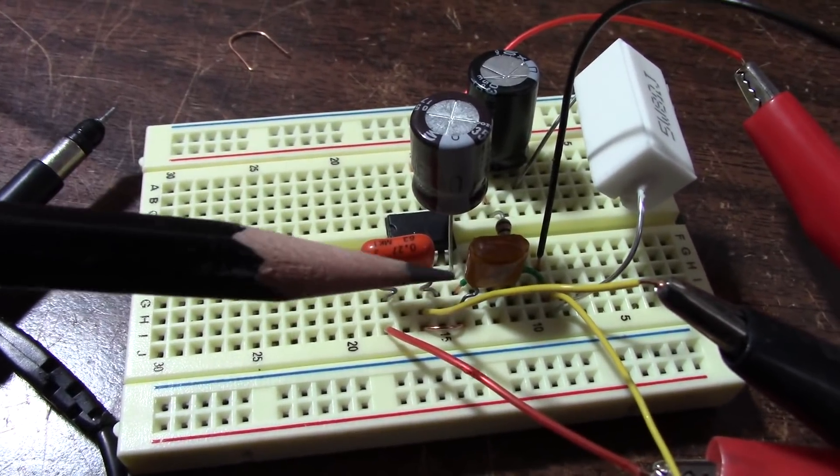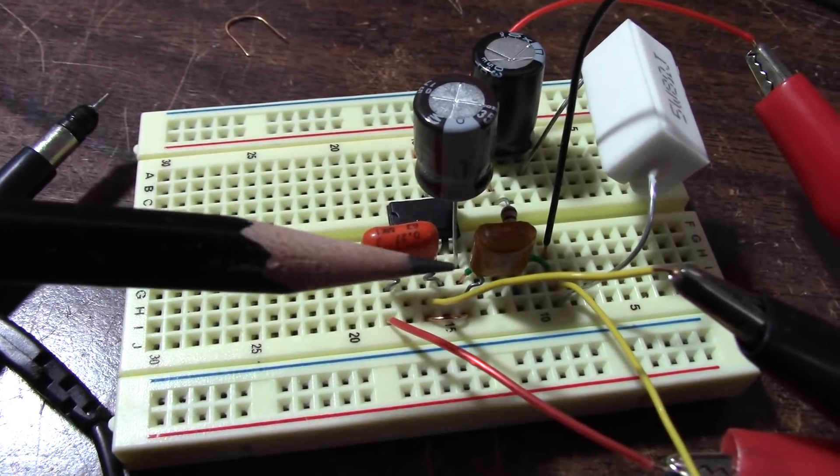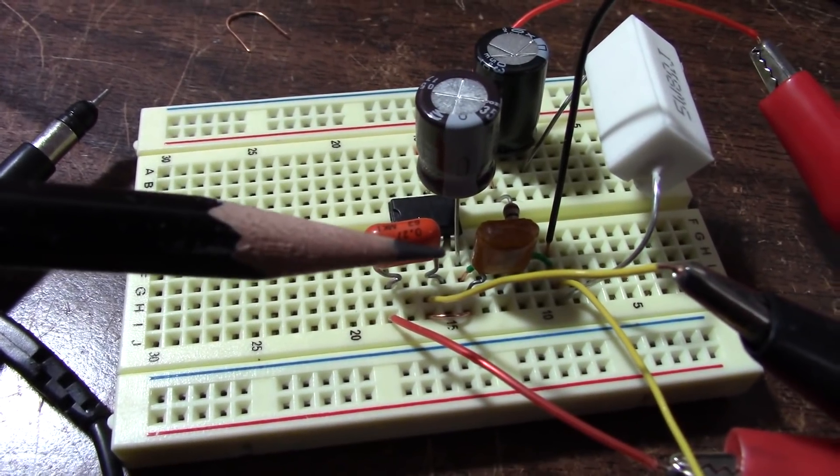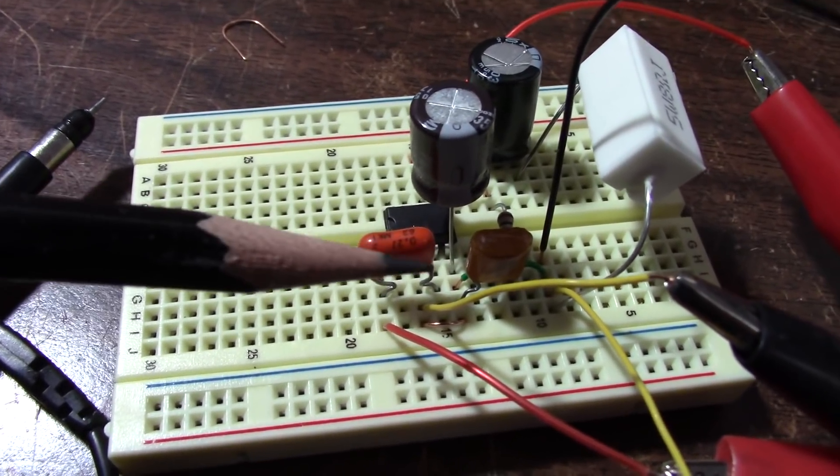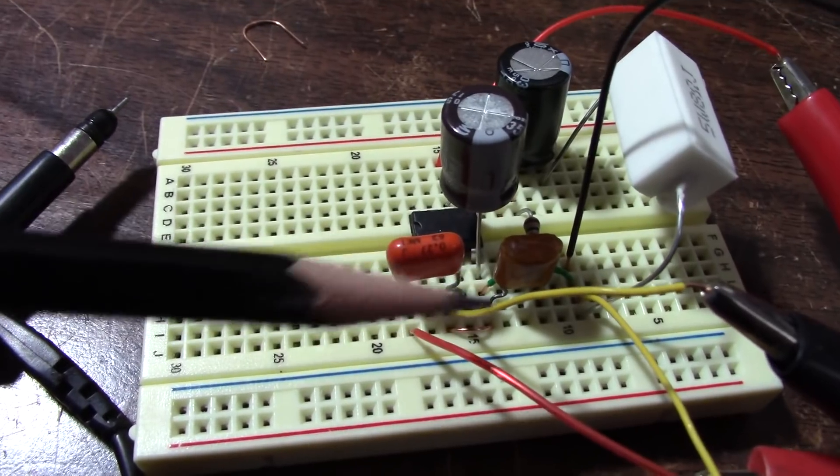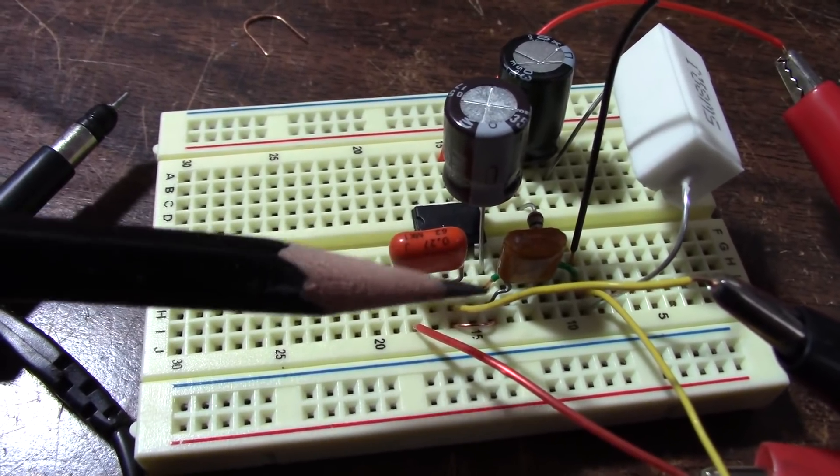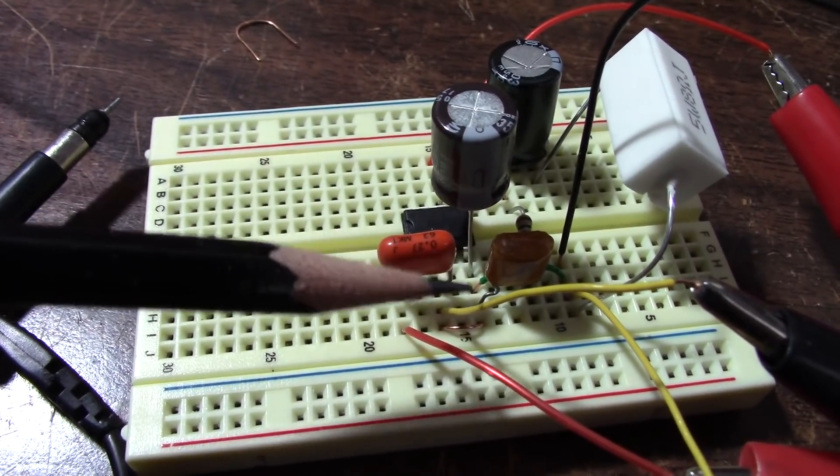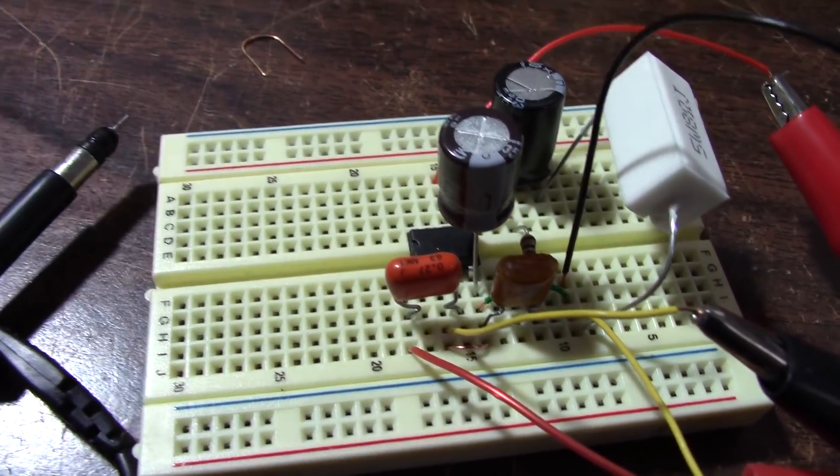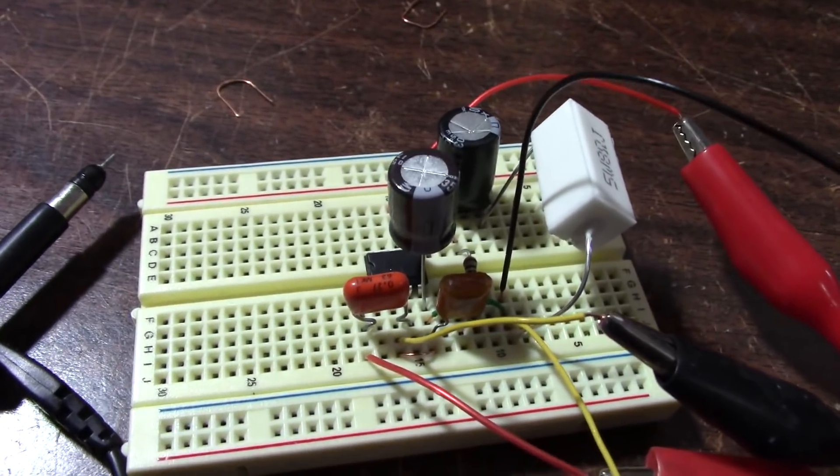I brought all, like I say, everything to a star point as they call it a star ground. Keep in mind though, there still are connection issues with the socket board. There's still resistance with the connections. But anyhow, let's see what it looks like now.